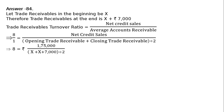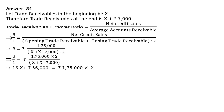Net credit sales is Rs.1,75,000. Substituting: 8/1 = Rs.1,75,000 / [(X + X + 7,000) / 2]. This gives us: Rs.1,75,000 × 2 / (2X + 7,000) = 8, leading to 16X + Rs.8,75,000.